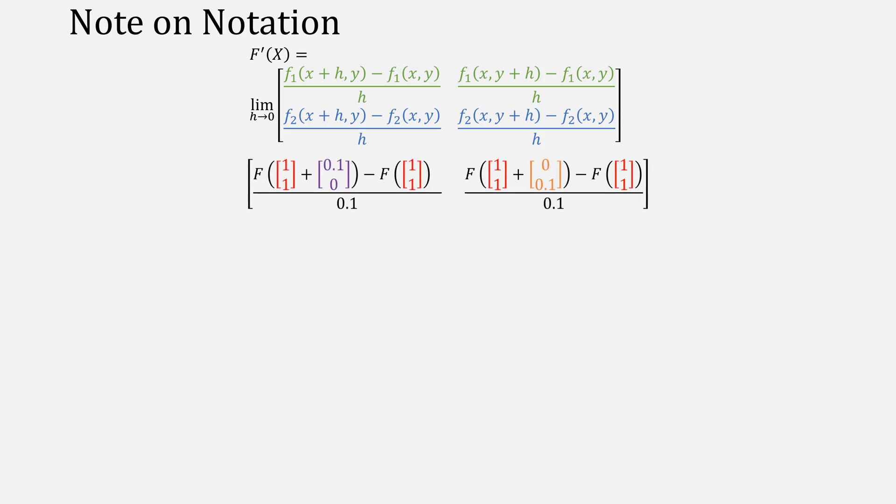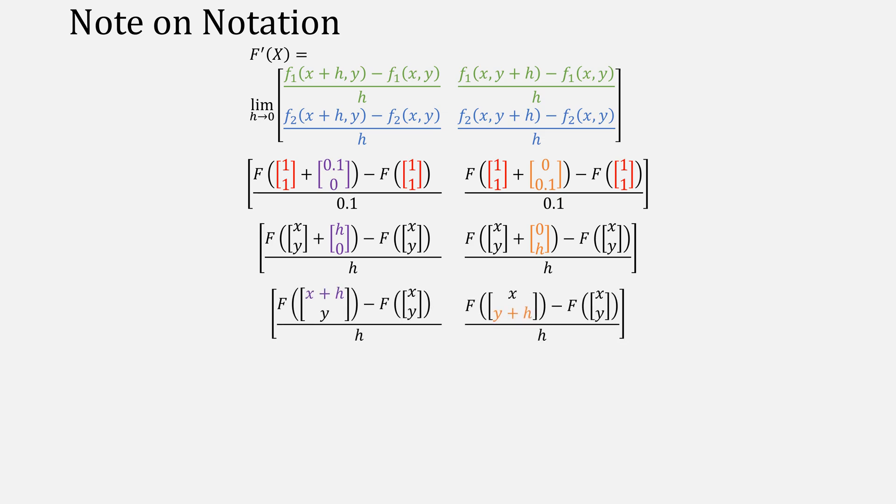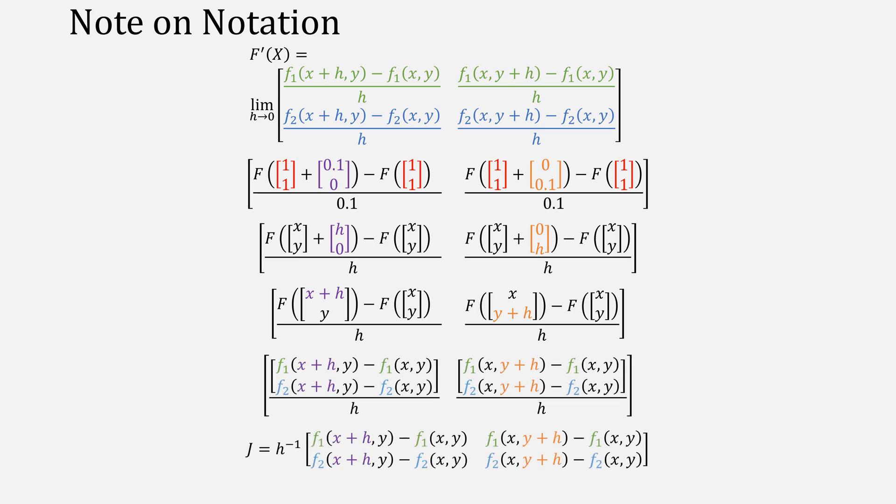This was the finite difference approximation we actually used, but let's generalize it a little bit to instead replace those changes of 0.1 to just simply be h. Then, if we look closer at what those are doing, we're simply adding h to x for the first two equations and adding h to y for the second two. If we expand things out, this is our Jacobian, essentially taking the finite differences to approximate our derivative of f.